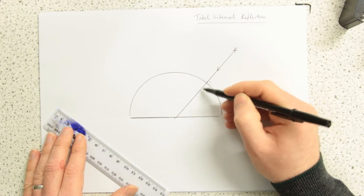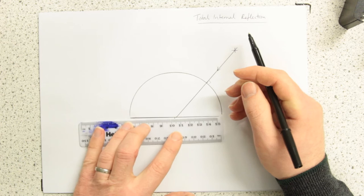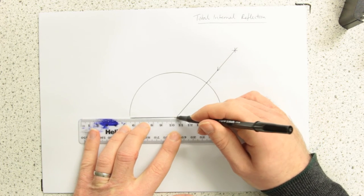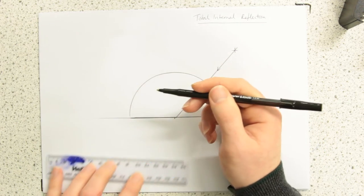It's coming along the normal, so there's no refraction happening here. And we know that the refracted ray went basically along the boundary there.